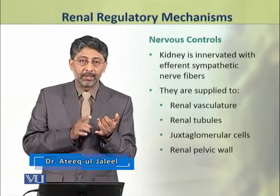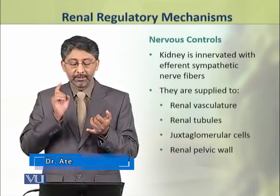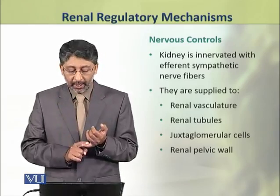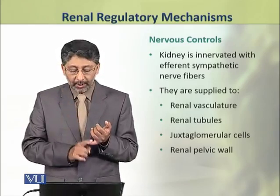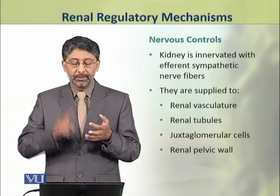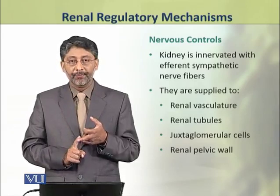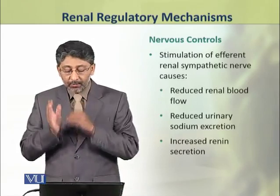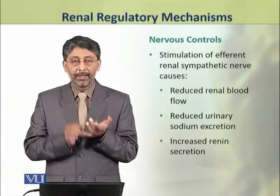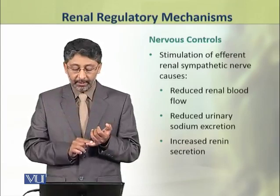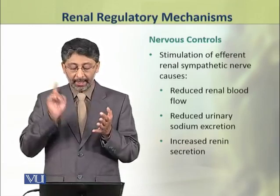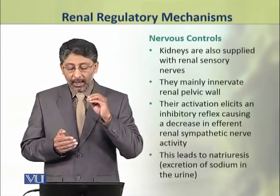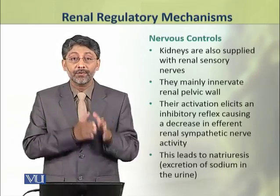The kidney is innervated with efferent sympathetic nerve fibers. These efferent sympathetic nerve fibers are supplied to the renal vasculature, renal tubules, juxtaglomerular cells, and renal pelvic wall. Their stimulation causes reduced renal blood flow, reduced urinary sodium excretion, and increased renin secretion. Kidneys are also supplied with renal sensory nerves.